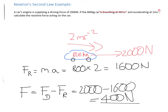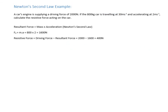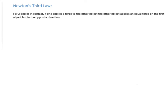Let's move on to Newton's third law, which can be a little bit tricky. You've got two bodies in contact; if one applies a force to the other, the other object applies an equal force but in the opposite direction. The easiest example: we've got a table with an object sitting on it, applying a weight force W downwards. That means the table must be applying an equal and opposite force upwards. This force is called a normal contact force, abbreviated NCF.